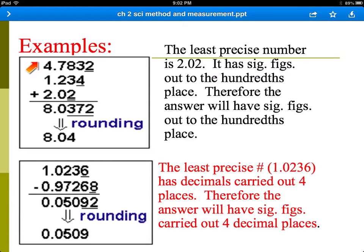So we have to do the addition. We get this big long number here, and then we're going to round to the least number of decimal places. This number contains the least number of decimal places, so we have to round to the hundredths. Therefore, 8.04 is the correct answer.